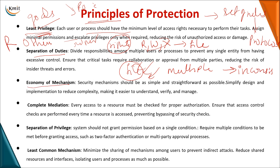Economy of mechanism means that whatever principles or rules you are designing, you ensure that their implementation is very easy. Ultimately, whatever theoretical terms are used, they have to be implemented — so you ensure the algorithms or principles you design are easy to implement.